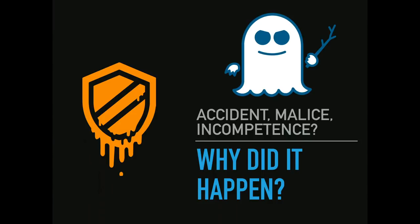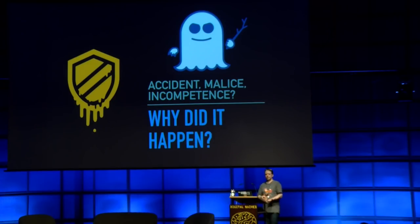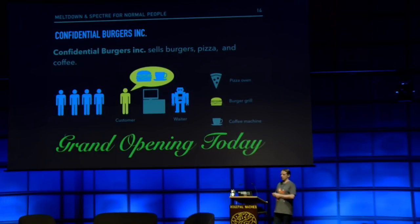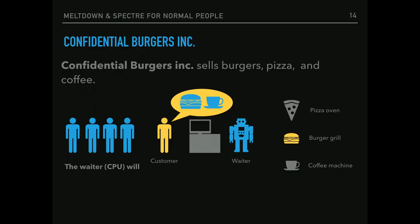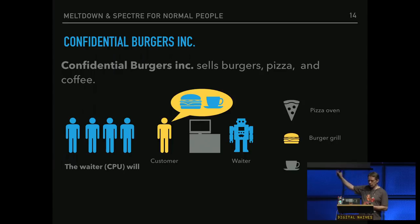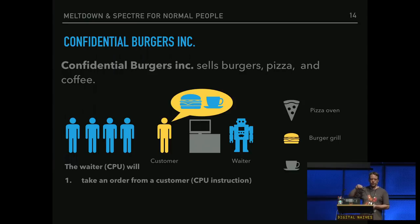This is the part where I tell you how did that happen. Was it malice? Were they stupid? What happened? To explain this, imagine you're running a burger shop — your first burger shop. You sell pizza, you sell burgers, you sell coffee. That's it. Customers come in, it's a takeaway, they place the order, you prepare the order, and they leave. Today's grand opening, and you have one waiter — aka CPU core — and one customer is basically one CPU instruction. The order the customer has, like a burger and a coffee, are the micro-operations of the CPU instruction.